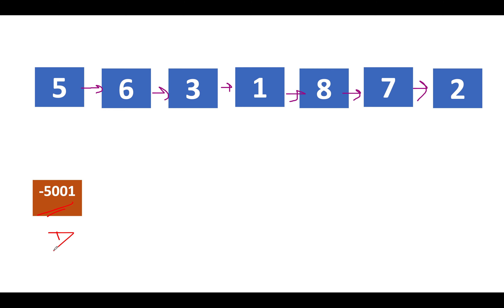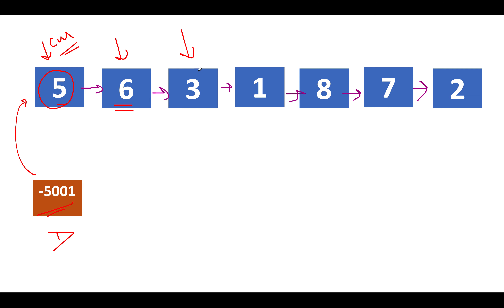I've assigned a value of -5001 to the dummy node because the question specifies that the range of values lies from -500 to +500. We create the dummy node, attach it to the list head, and use an iterator called 'current' to iterate over all elements. The first element is 5 — single element, move ahead. Next is 6; 5 is lower than 6, sorted order maintained, proceed ahead. Next is 3.